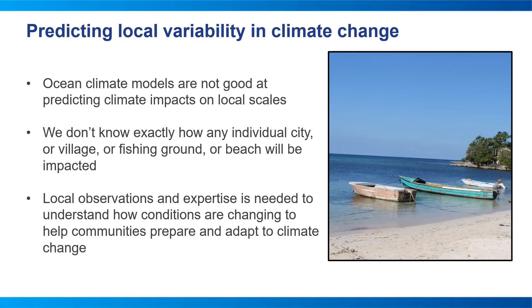All of this regional variability in ocean climate change means that predicting local impacts can be quite difficult. Ocean climate models can predict global changes, but we don't know exactly how any individual city, village, fishing ground, or beach will be impacted. At EDF, we strive to incorporate local observations and expertise to understand how conditions are changing to help communities prepare and adapt. For example, in South America's Humboldt Current, in collaboration with government agencies in Chile, Peru, and Ecuador, EDF co-designed an ecosystem-level observation, prediction, and early warning system to monitor local climate conditions and inform adaptive management.